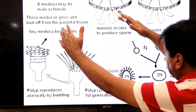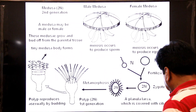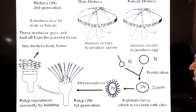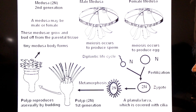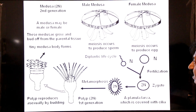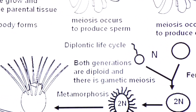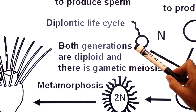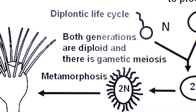So the complete life cycle of cnidarians is called a diplontic life cycle, in which both generations (polyp and medusa) are diploid, and there is gametic meiosis, meaning sperm and eggs are produced via meiosis.